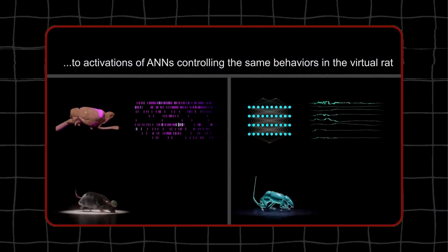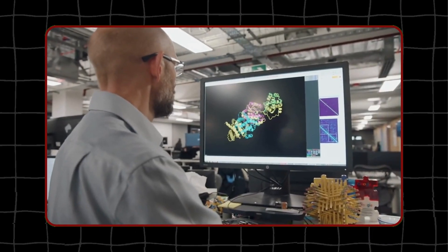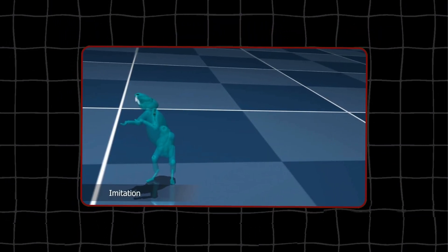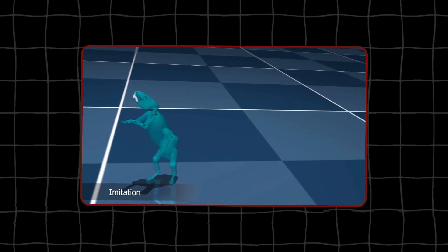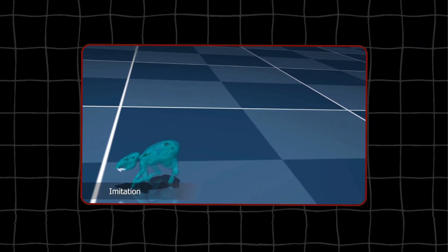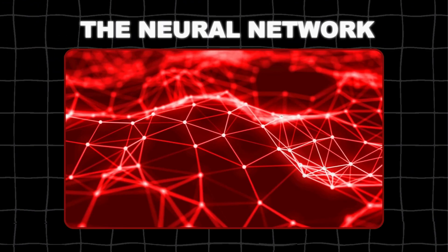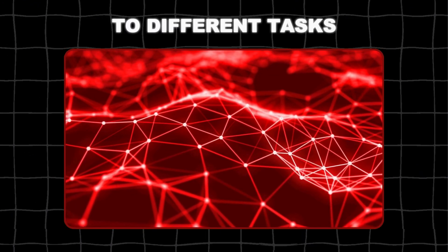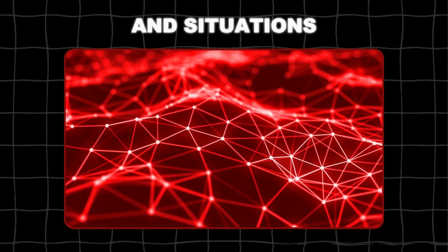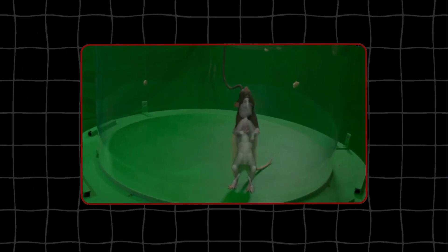The neural network could apply what it learned to new situations. The virtual rat could move and behave in realistic ways it wasn't specifically trained for. Just like a real brain, the neural network could adapt its knowledge to different tasks and situations. This ability to generalize is similar to how a real rat, or even a human, learns.